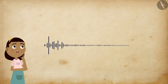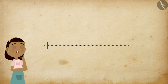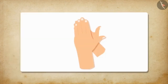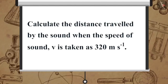Now let us solve a simple problem together. Suppose you clapped your hands near a cliff and you heard the sound after 3 seconds. Calculate the distance travelled by the sound when the speed of sound V is taken as 320 meters per second.